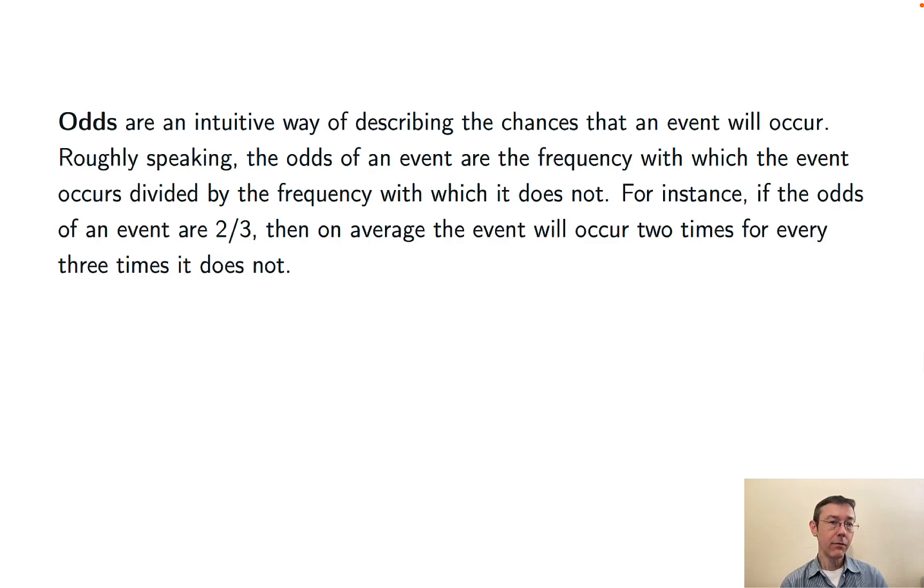Simple example: if the odds of an event are two-thirds, or two to three, then on average the event's going to occur twice for every three times it does not.